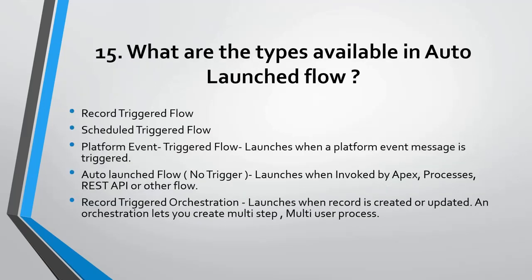What are the types of auto-launch flows? There are five types: record-triggered flow, schedule-triggered flow, platform event-triggered flow (launches when a platform event message is received), auto-launch flow (launched when invoked by Apex, processes, REST API, or other flows), and record-triggered orchestration (launches when a record is created or updated, enabling multi-step and multi-user processes).